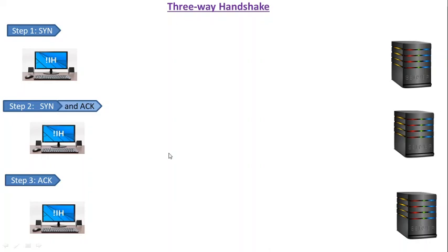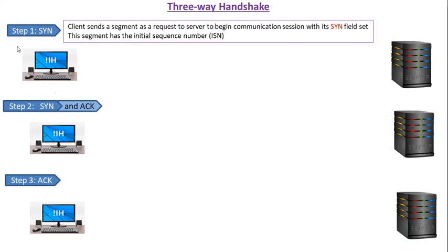The three-way handshake is a method which requires three steps: step one, step two, and step three. In the very first step, the client — for example this is our client and this is the server machine to which we want to communicate — sends a segment that has a sequence number called the initial sequence number. In that segment, the SYN field is set to one, and it is sent from the client node to the server node.